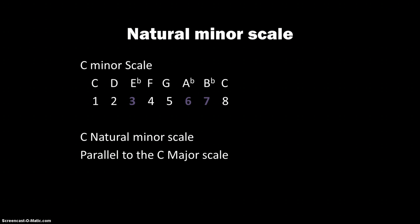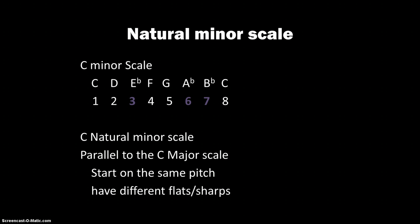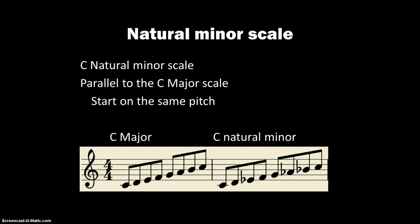When we have a major scale and a minor scale that start on the same note but have different flats or sharps, we call those parallel. So C major and C minor are both parallel scales. Let's take a look at the notation on that. In the first measure I have a C major scale, C up to C all natural, and then C up to C with those three lowered notes. These are parallel scales because they both are based on the note C.